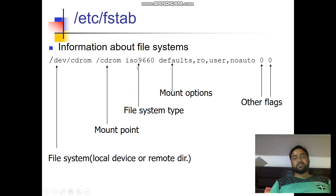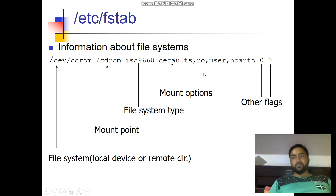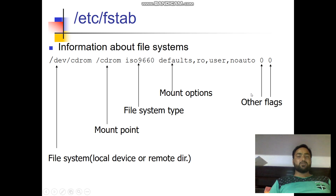'iso9660' is the file system type — which type of file system is used. Then 'defaults, ro, user, noauto' are the different mount options used to mount the particular file system. '0 0' are other flags that can be used for security patches, partitioning details, and similar settings.